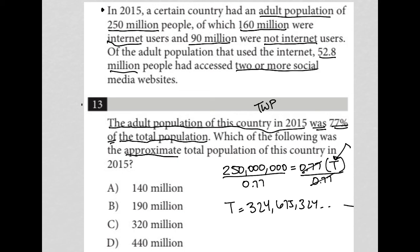Given our answer choices, the approximate total must be choice C — approximately 320 million total people in this country. So choice C is the correct answer.